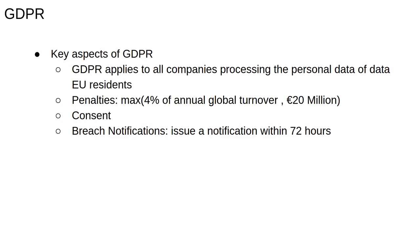GDPR also requires issuing breach notifications. If a data breach happens — that is, someone who shouldn't has obtained your data — and this breach is likely to, quoting the legislation, result in a risk to the rights and freedoms of individuals, data processors must issue a notification within 72 hours of first having become aware of the breach.